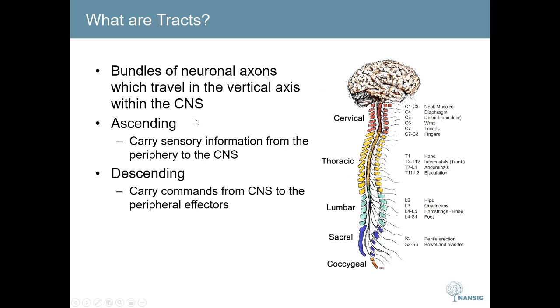Tracts are split up into ascending, carrying sensory information from the periphery to the central nervous system, and descending, which carry commands from the central nervous system down to effectors.